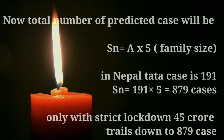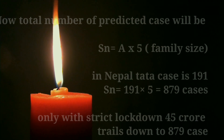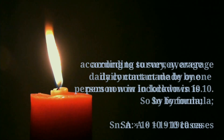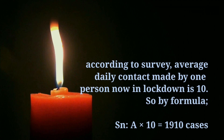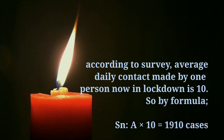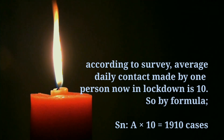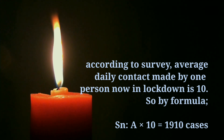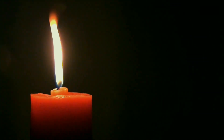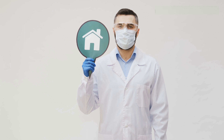By only lockdown, we can restrict 45 crores down to 879 cases. Now, in a local survey it was found that even during lockdown, one person meets with another person daily. Assuming the 10 persons he meets are the same every day, there will be 1,910 cases in the next 14 days. Though it might seem a very small number, it is a huge number compared to the over 50 lakh population.